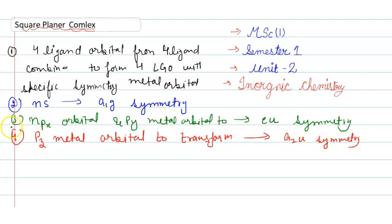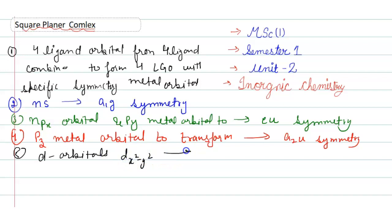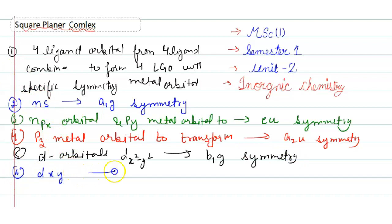Fifth point regarding d orbitals: the dx²-y² orbital transforms to form b1g symmetry, and the dxy orbital transforms to form b2g symmetry.